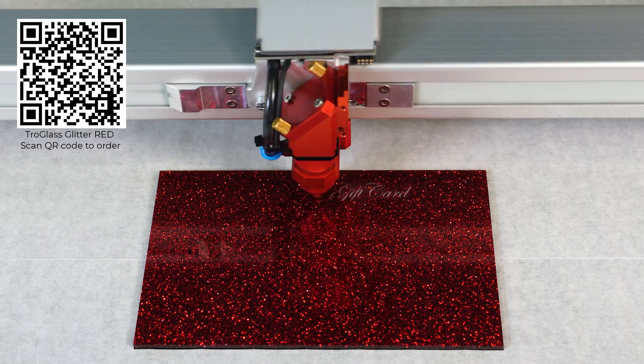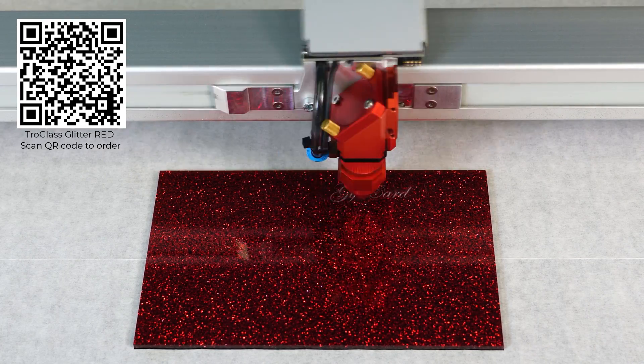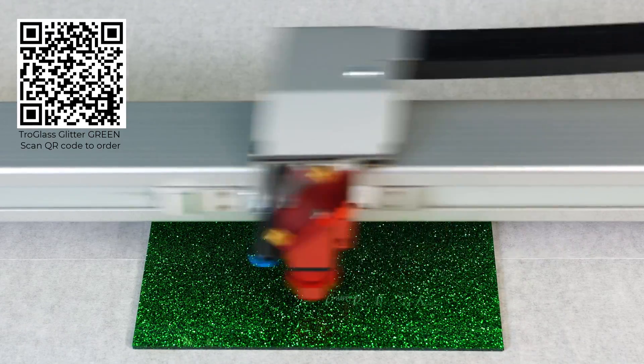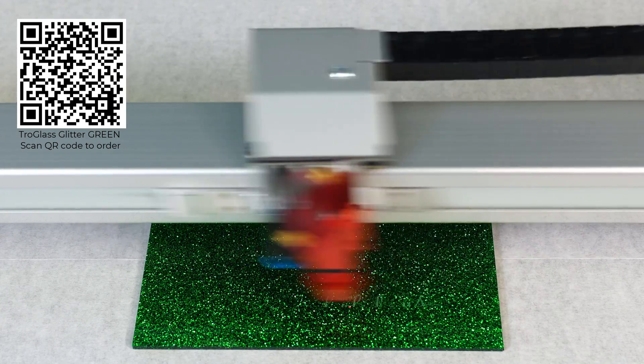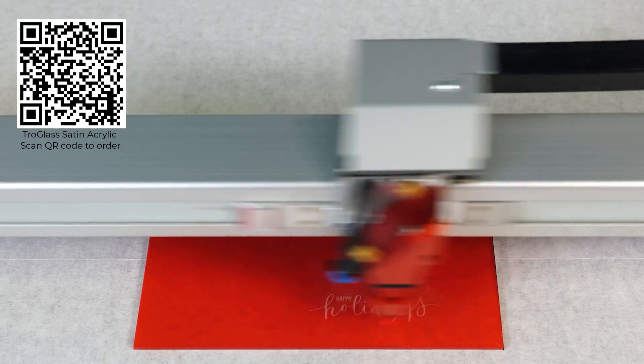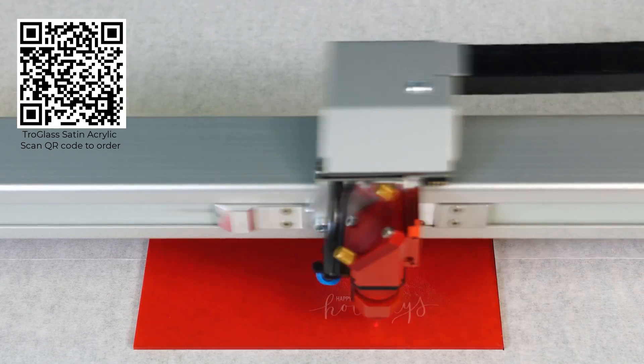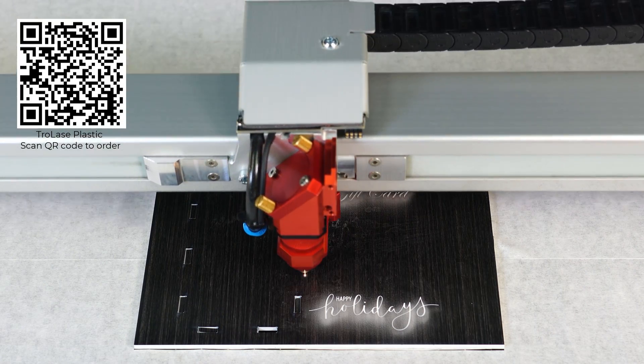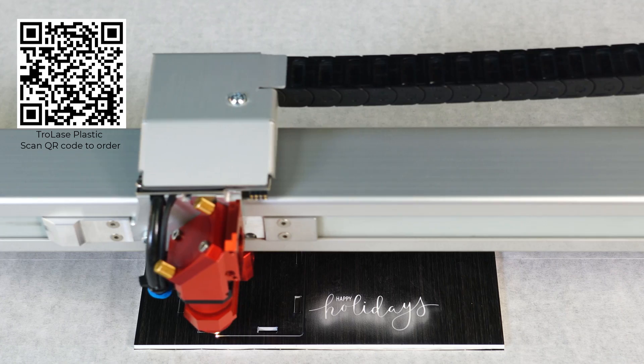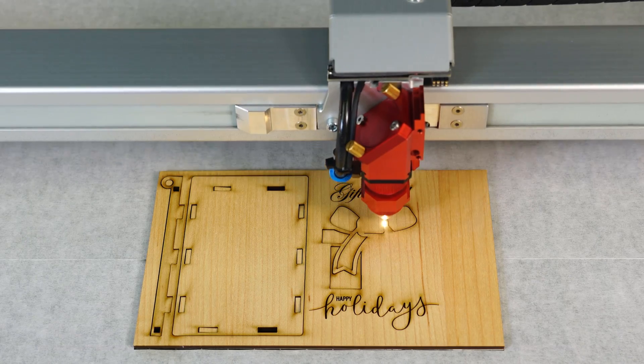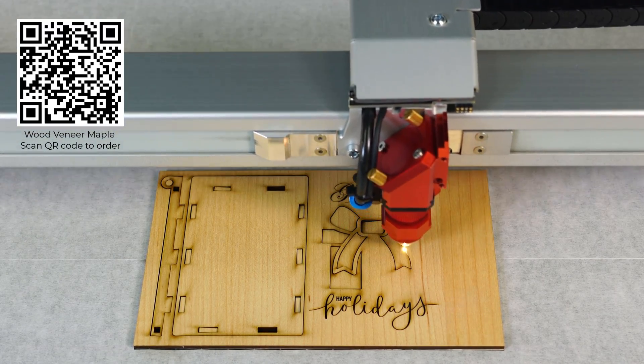Moving through the file, switching to three millimeter troglas red glitter acrylic. Continuing into the three millimeter troglas green glitter acrylic. Now processing the three millimeter troglas satin red acrylic. Now continuing on to a three millimeter troglas plastic. Now I will finish the file with our maple veneer wood.